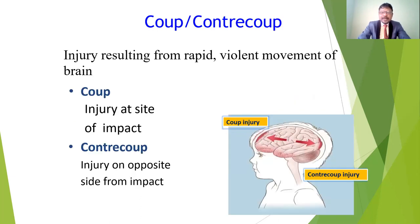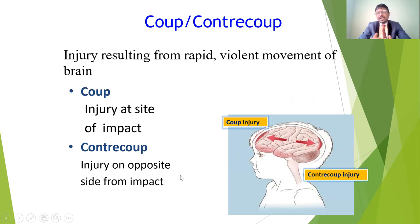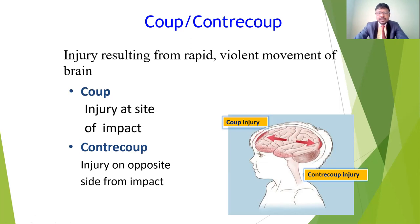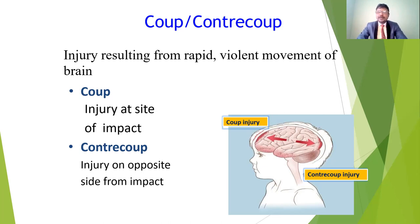Other types of mechanisms are coup and contrecoup — resulting from rapid, violent movement of the brain. Coup injury means the injury occurs at the impact site — for example, injury at the frontal region gives effect to the frontal region. Contrecoup injury means because of the injury here, for example at the frontal region, the effect goes to the opposite side. That mechanism — where the hit is on one side but the effect goes to the opposite side due to pressure — is called contrecoup injury.